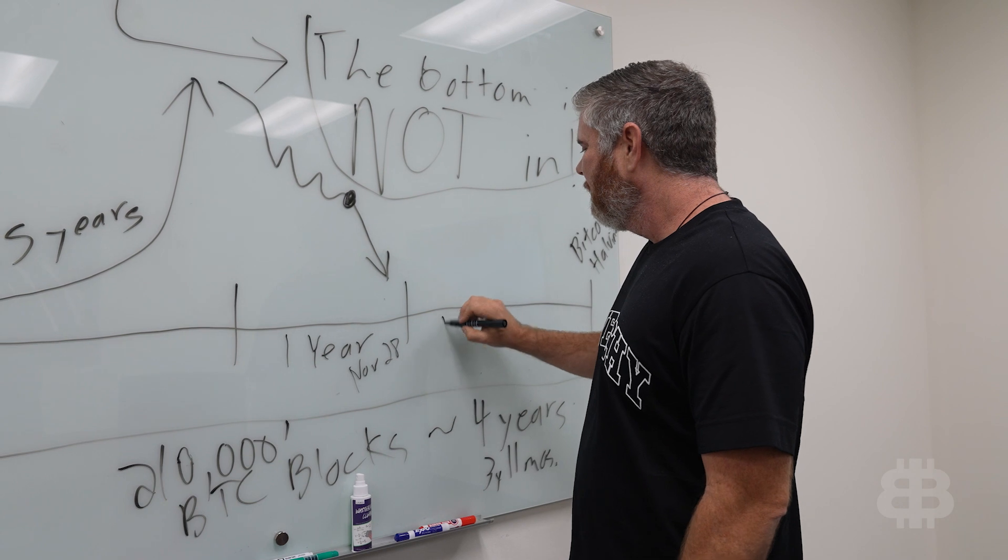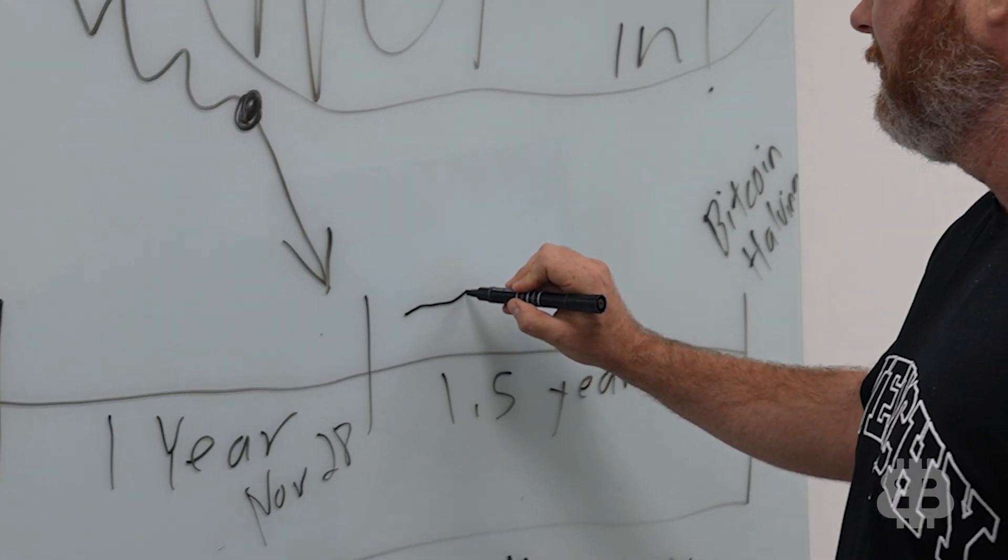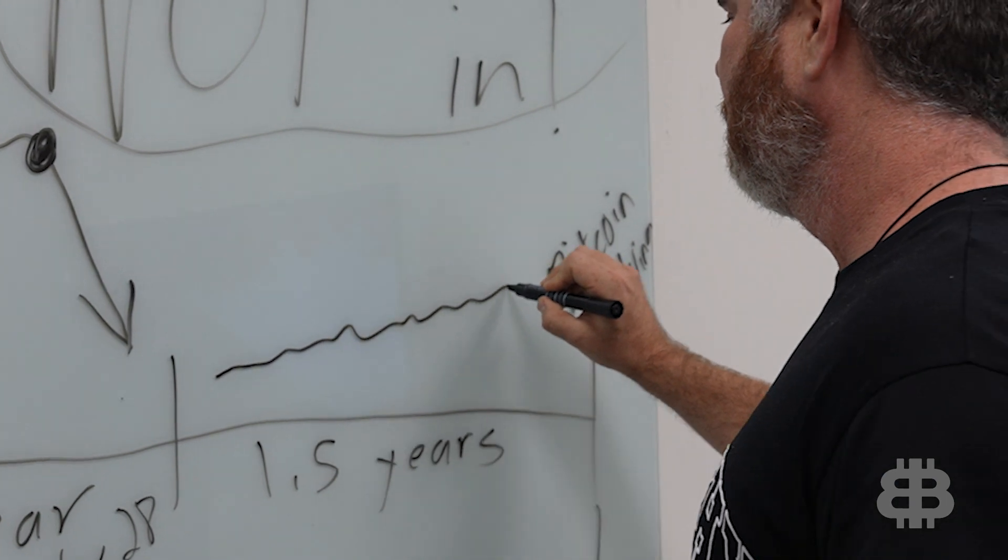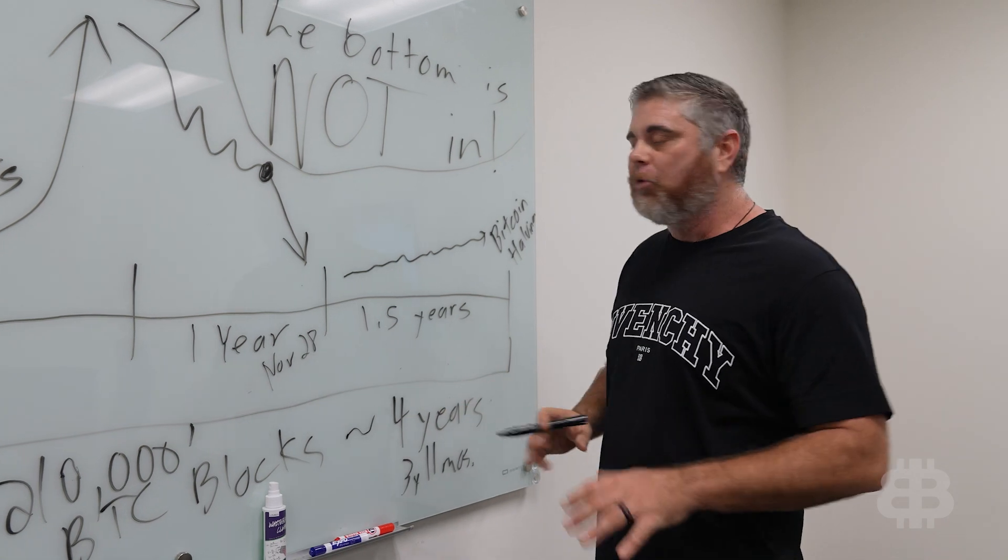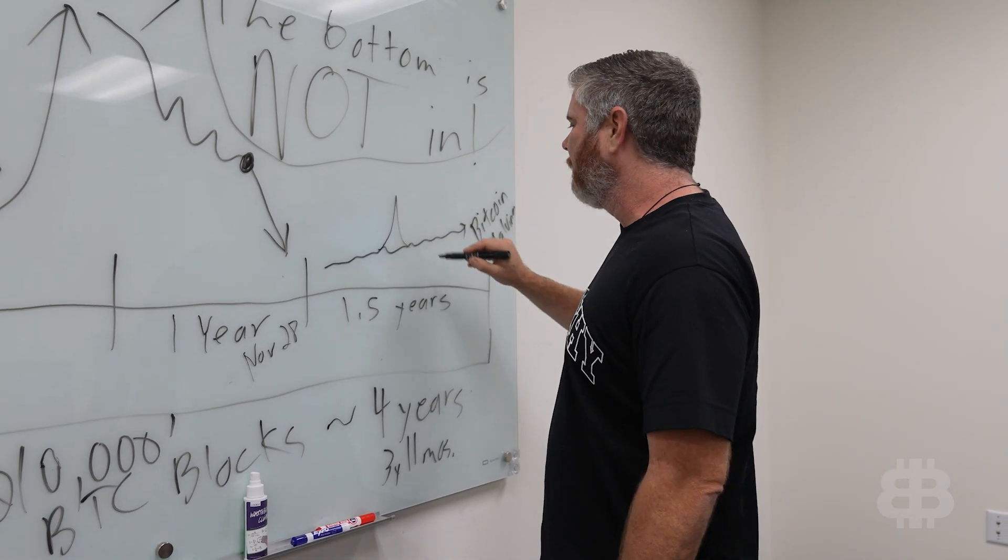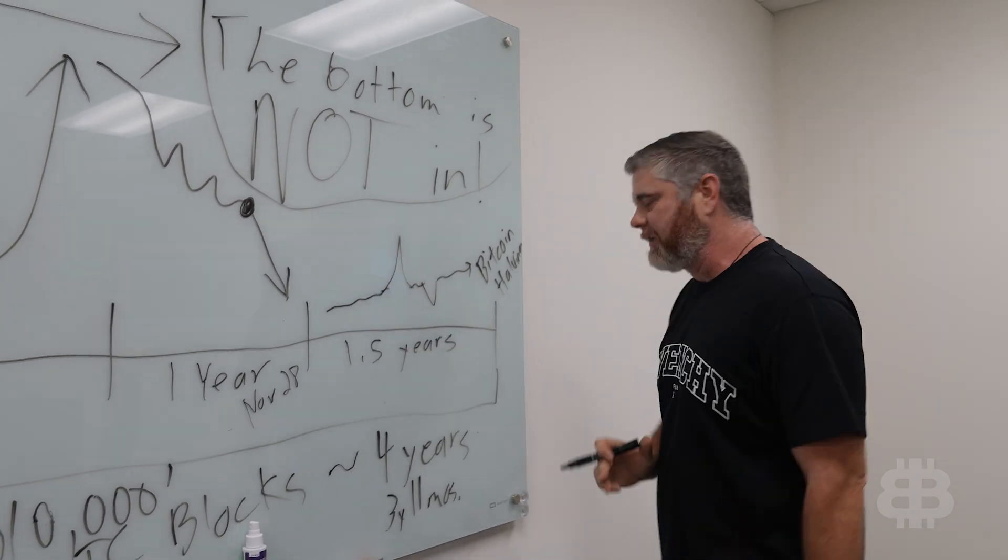And then what happens? Then you get 1.5 years of this. That is not fun. That's not sexy. It's sideways action. Very minimal gains. You'll probably have some spikes in there like that. You'll have some dips in there like that. Might look something like that, but overall, it's sideways action.